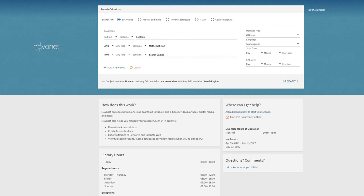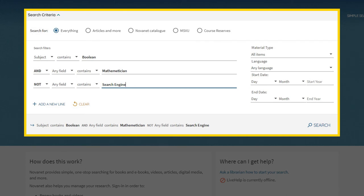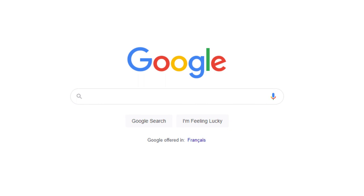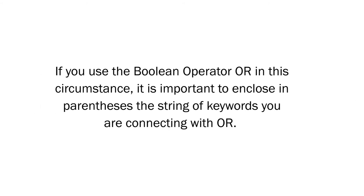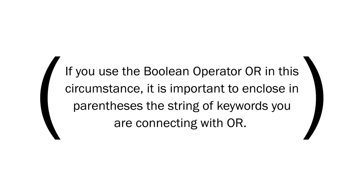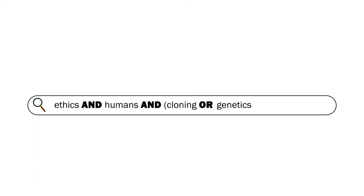Many databases available through library resources include drop-down menus for Boolean operators between search term fields. Boolean operators can also be used in a browser search engine like Google, even with only a single search bar. When using a single search bar, be sure to capitalize AND, OR, and NOT. If using OR, it is important to enclose in parentheses the string of keywords you are connecting with OR, so the search engine treats them as a unit — for example: ethics AND humans AND (cloning OR genetics OR reproduction).